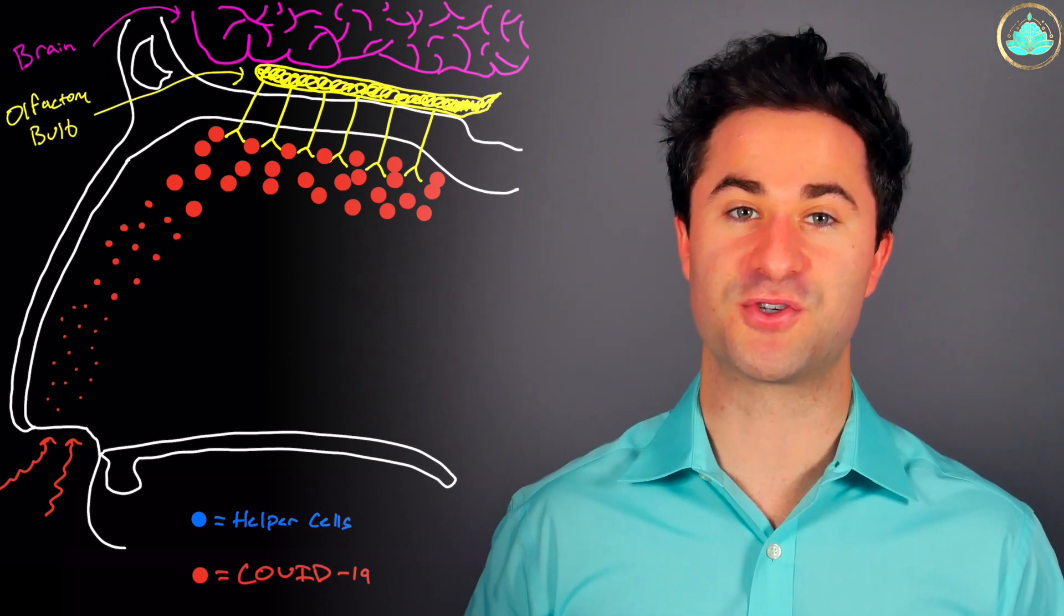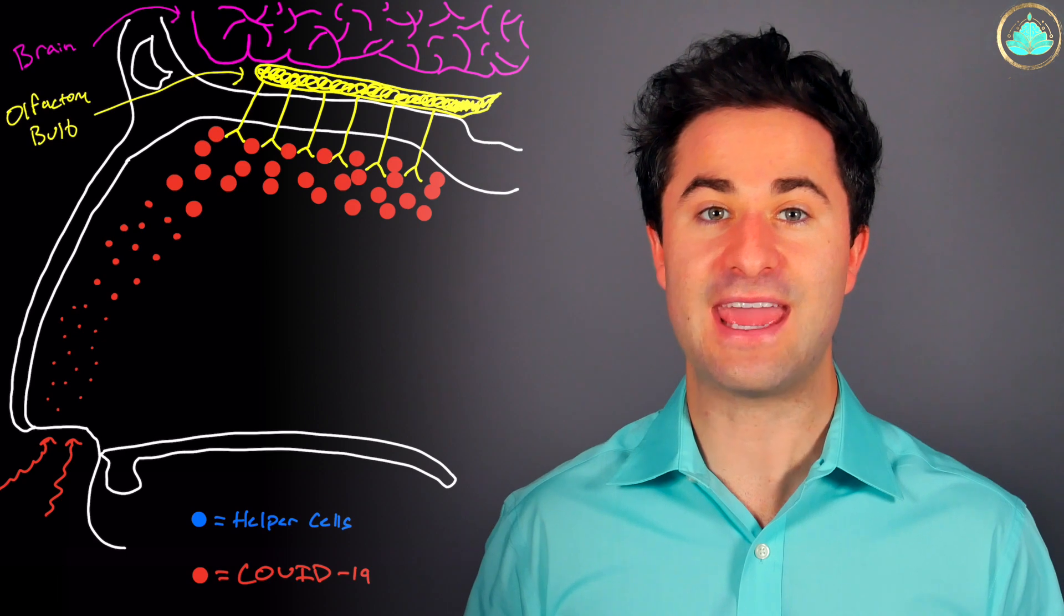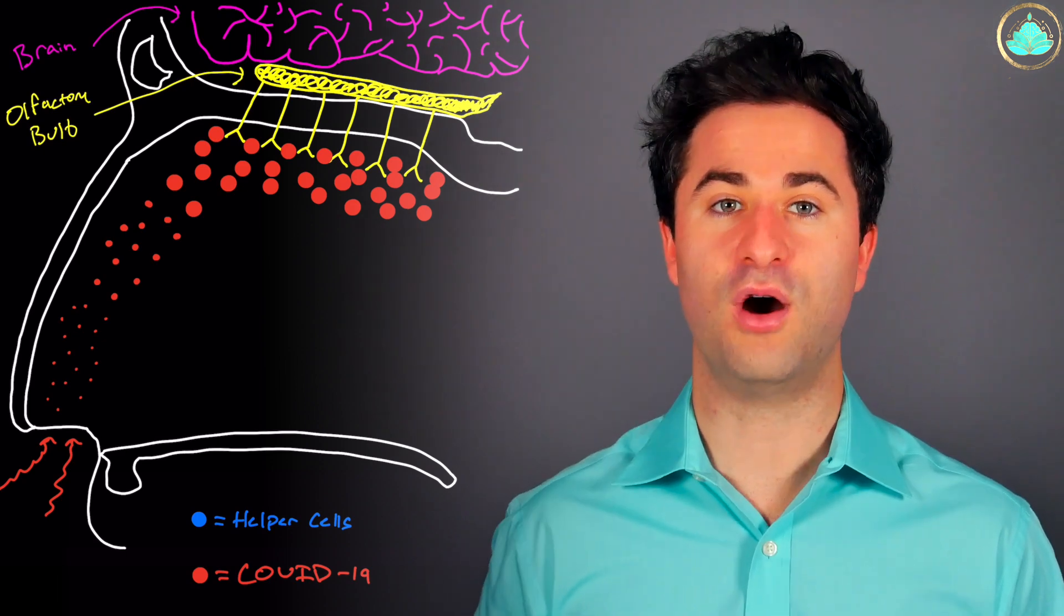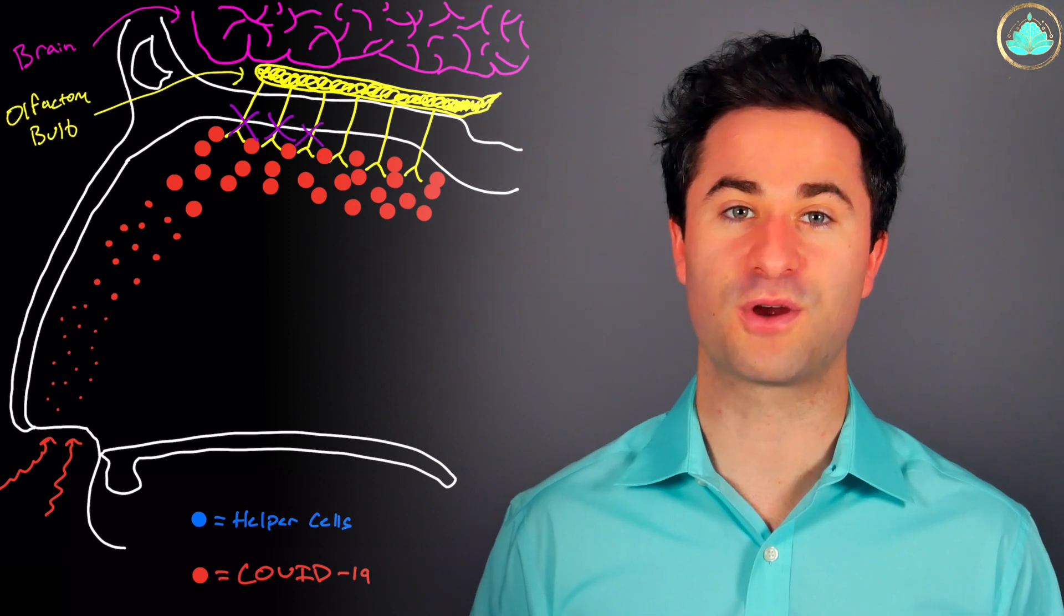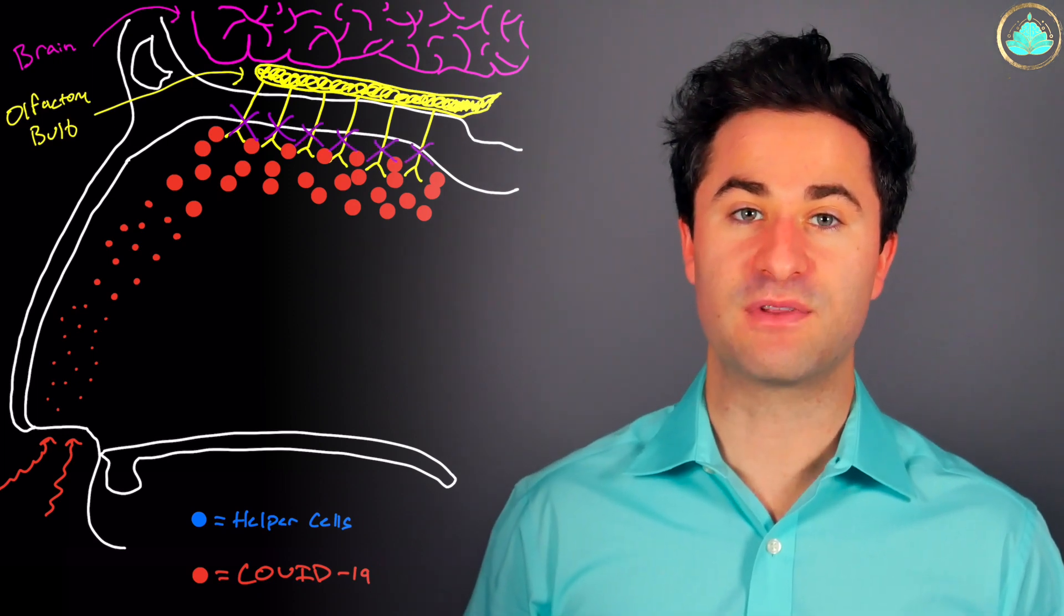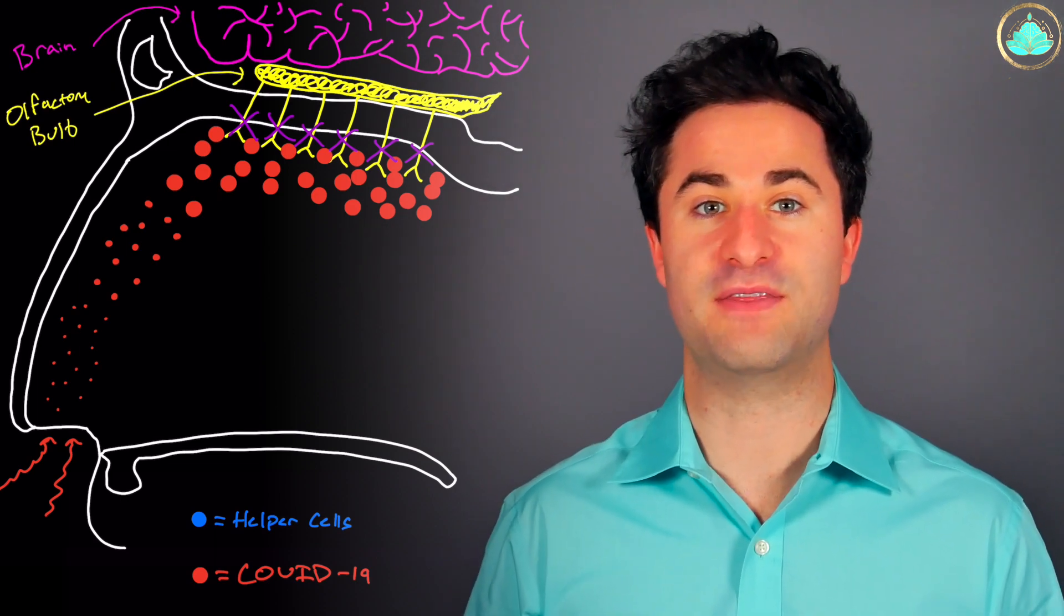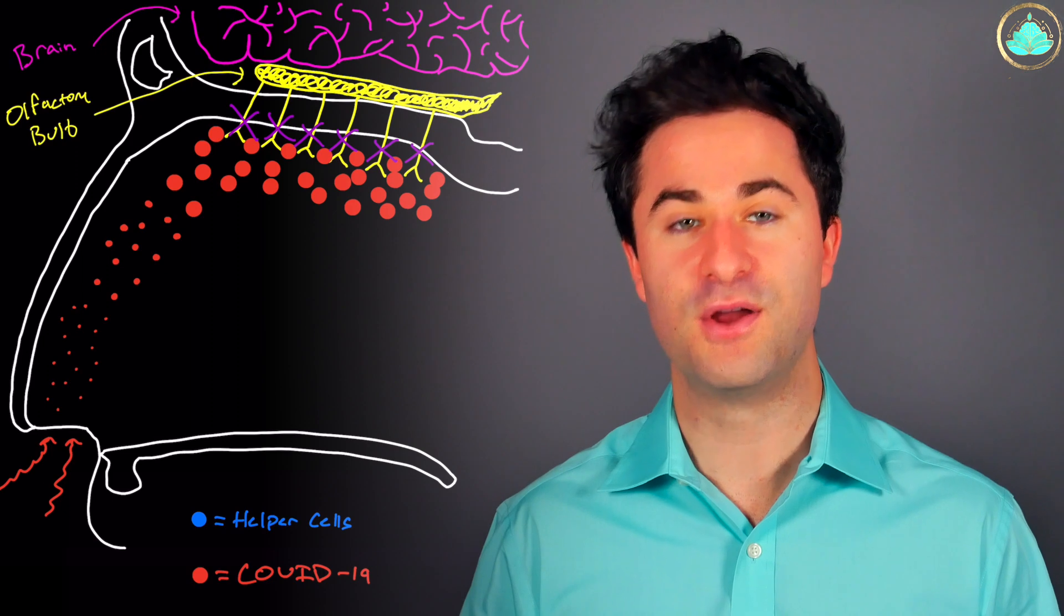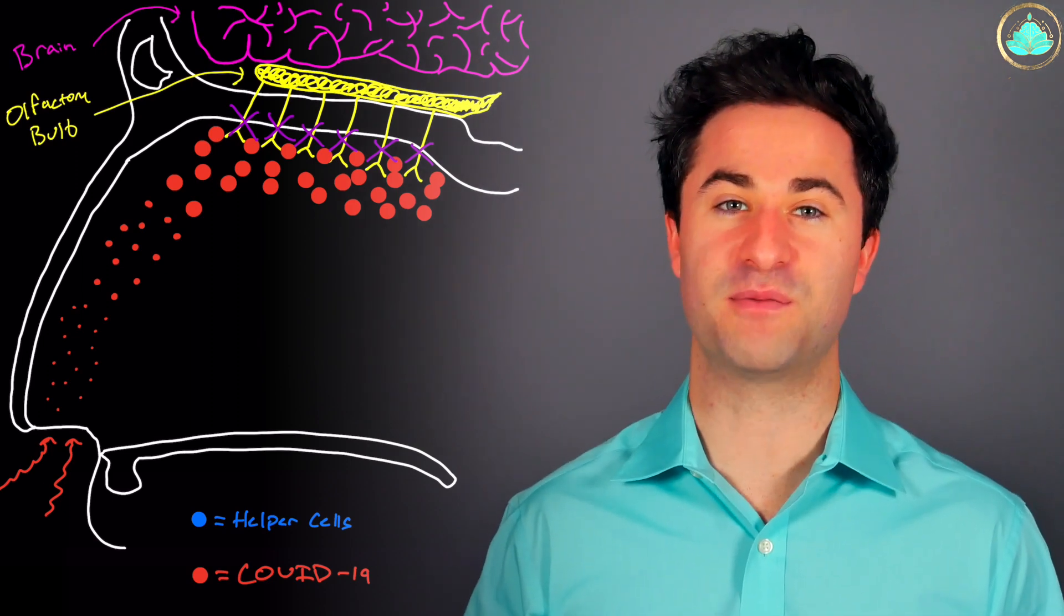Because these cells are destroyed, there's actually nothing to maintain the health and the proper functionality of those olfactory bulb neurons, and they eventually don't work the way they're supposed to. When these neurons don't function properly, there's no way to propagate the signal, or in this case, your sense of smell, from your nose to your brain, and thus you lose your ability to smell.